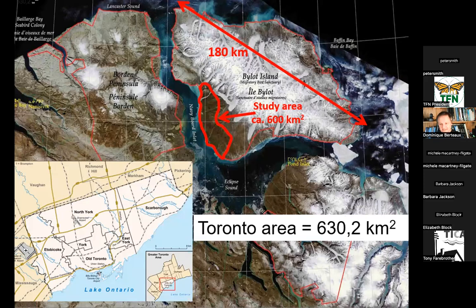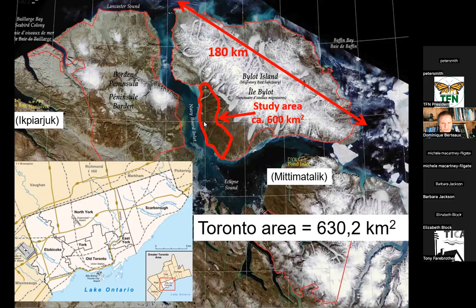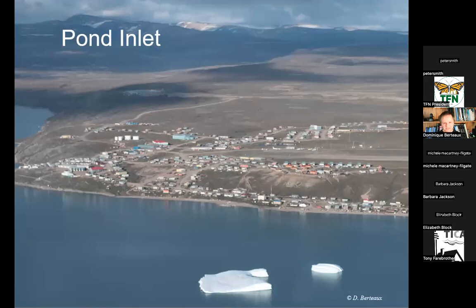To get there, I go through villages like Mittimatalik, also called Pond Inlet, or Arctic Bay, also called Ikpiarjuk in Inuktitut. There are some commercial air flights, but they're very expensive — more expensive than going to Europe or even Australia. Then I organize helicopter transport to the place where I work. Pond Inlet is a typical Inuit village with an airstrip and a few houses.